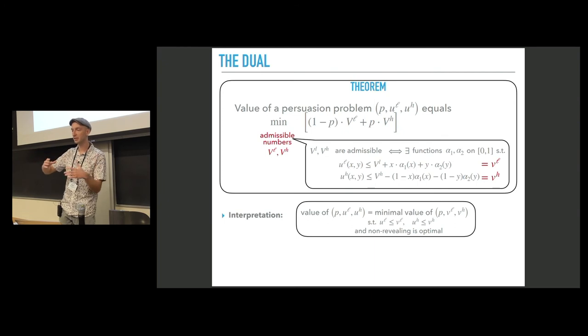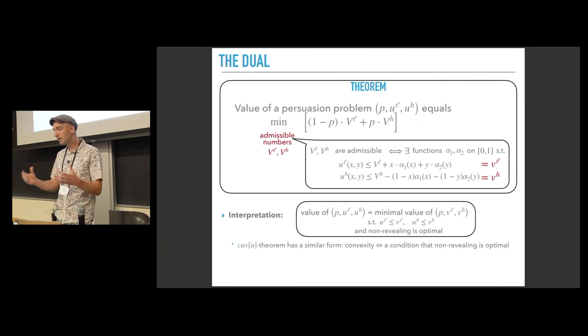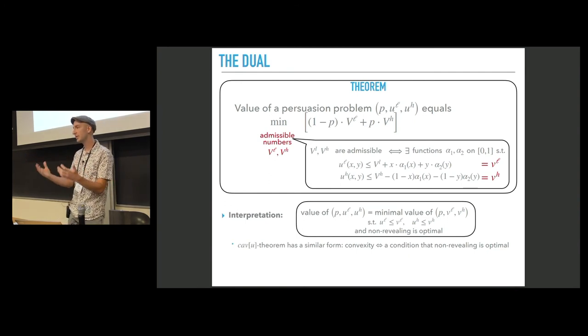And in this new persuasion problem the optimal information structure is revealing no information. It turns out that VL and VH that we can take are exactly the right hand side of those bounds. So it turns out that we do not need to minimize over all possible persuasion problems that have utilities above the given ones. It's enough to stick to a particular functional form.